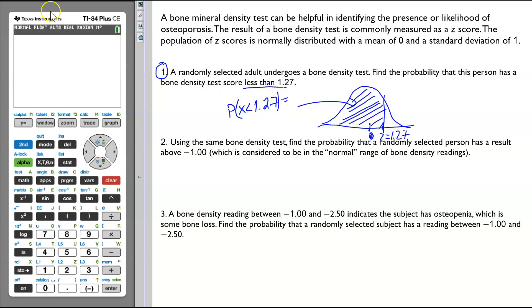In TI-84 graphing calculator, go to 2nd, VARS to get to distribution. Go to normalcdf, normal cumulative distribution function. Enter. In the normalcdf, you will need to enter lower limit, upper limit, mean, and standard deviation.